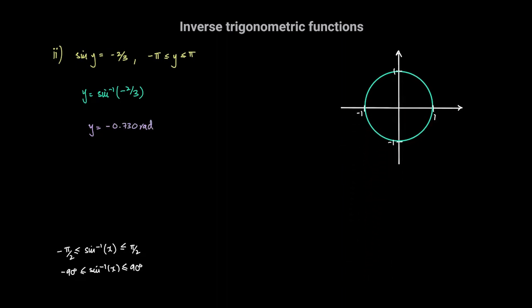If we look at the unit circle, the angle negative 0.73 radians is in the fourth quadrant. We know that the sine of this angle is the y-coordinate of the point on the unit circle. The question is: are there any other points on the unit circle for an angle ranging from negative pi to pi radians for which the y-coordinate is the same?